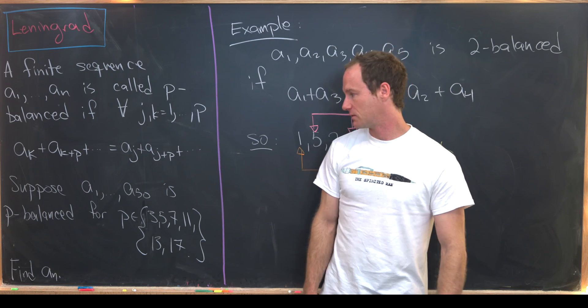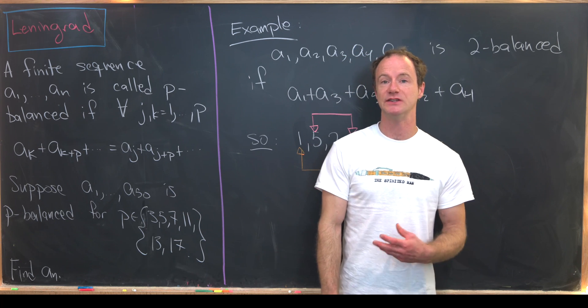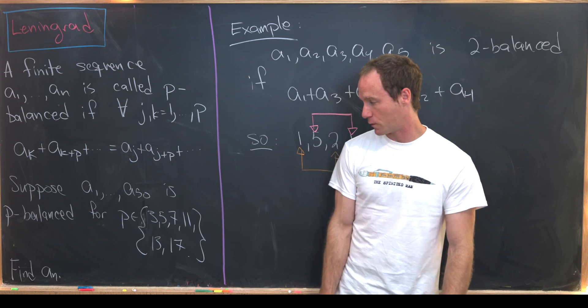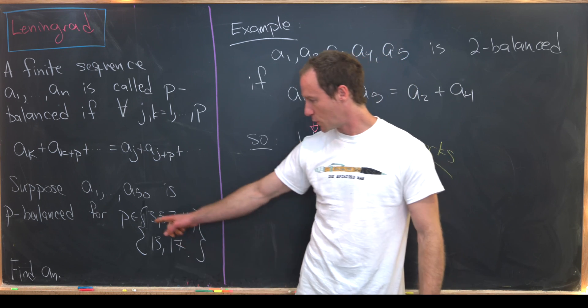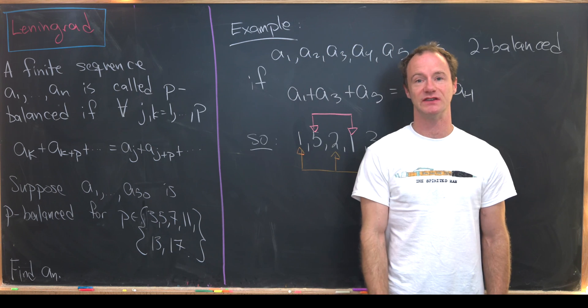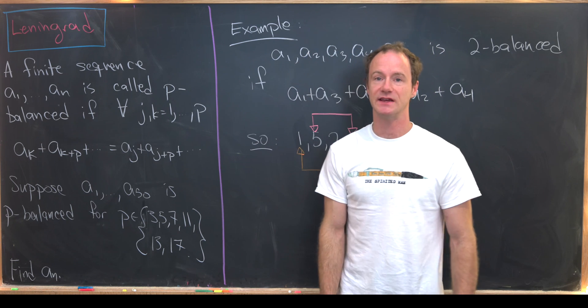So now let's look at the problem. We want to suppose that the sequence a1, a2 up to a50 is p-balanced for the following primes: p equals 3, 5, 7, 11, 13, and 17. Our goal is to find a closed form for a sub n.